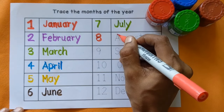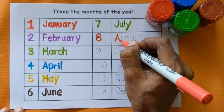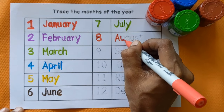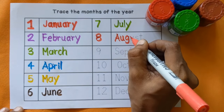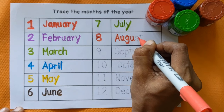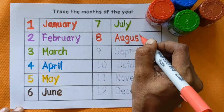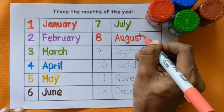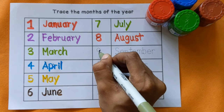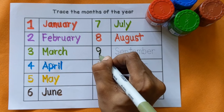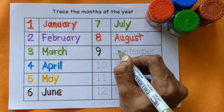Number 8. August — A, U, G, U, S, T — August, red color.